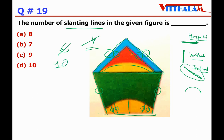This line is a curve line, so we will not count it. Therefore, the total number of slanting lines is ten. So the answer is D.